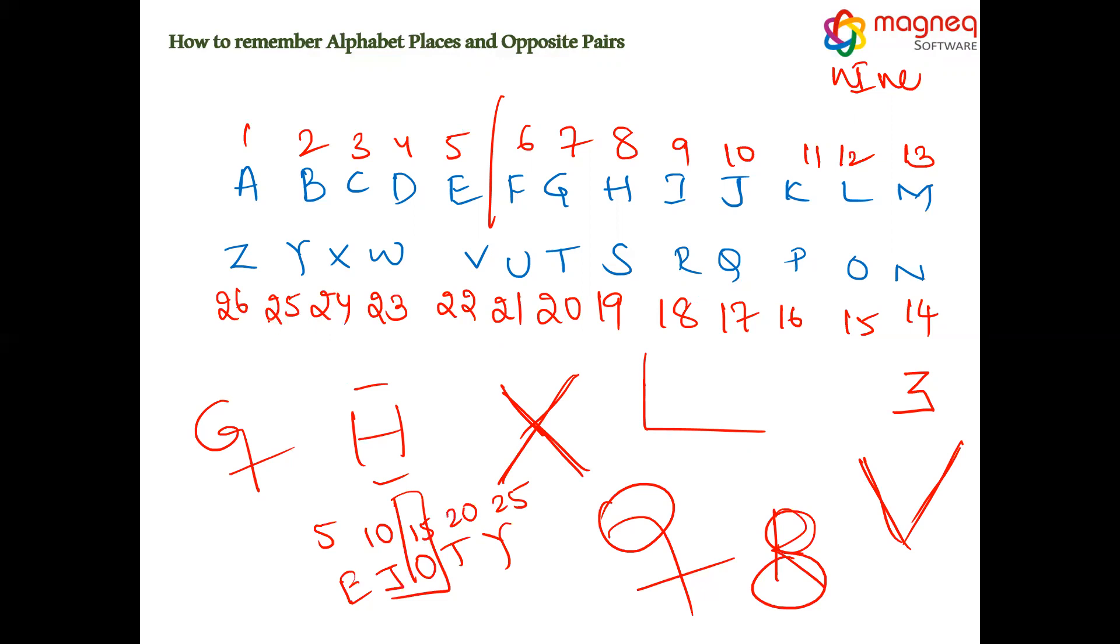I hope you can remember. This is about how we can remember alphabet places. And what about opposite pairs?